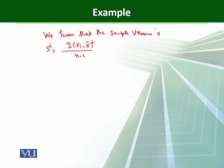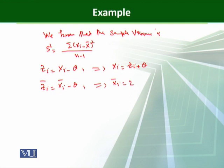So we make the transformation zi = xi - θ, and this implies that xi = zi + θ. If we take the mean of these, we will find that z̄ = x̄ - θ, and this also implies that x̄ = z̄ + θ.